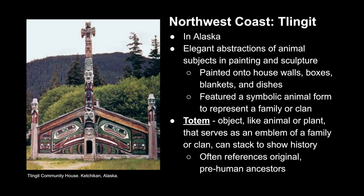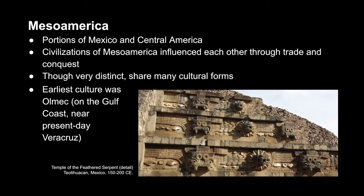Looking at the Tlingit community house, which we see here, there are representations of bears, whales, beavers, and ravens — all abstracted in form. Additionally, in the center we see a stacked totem pole, which tracks a family or clan's history, even back to mythology, functioning similarly to a family crest.